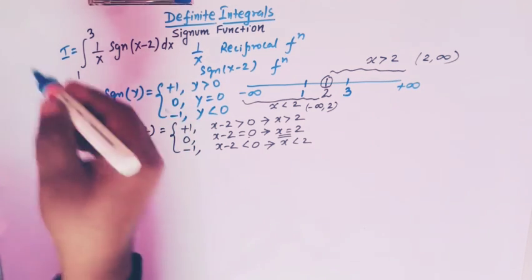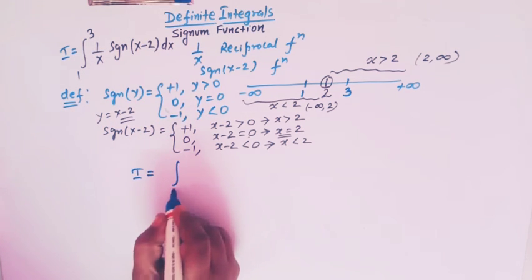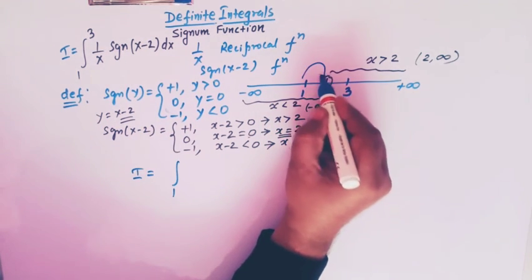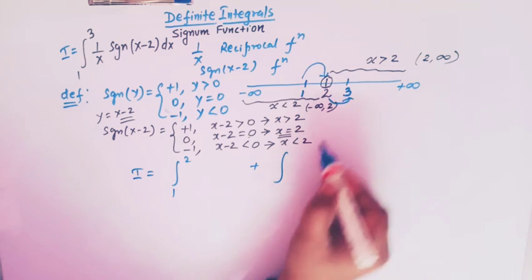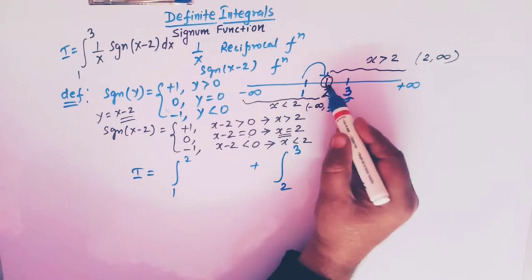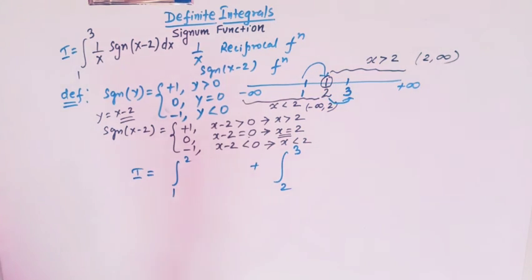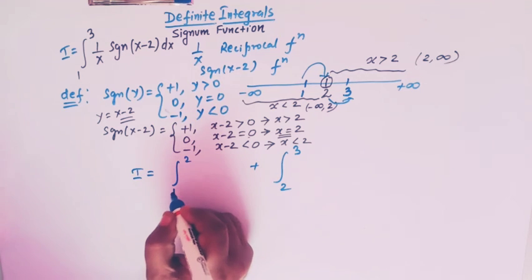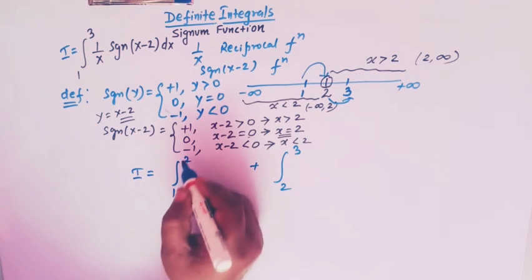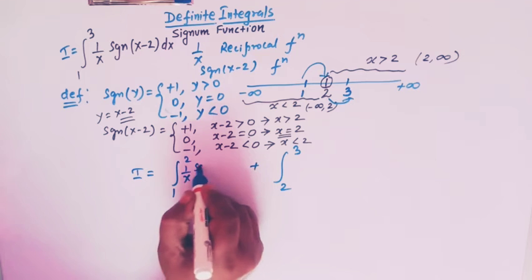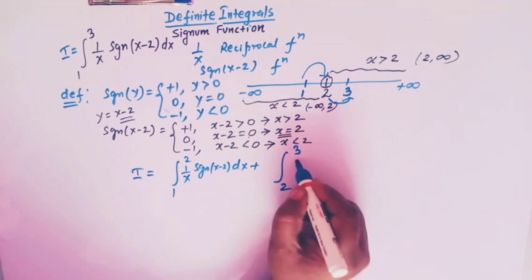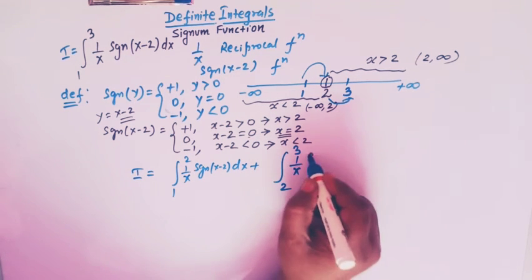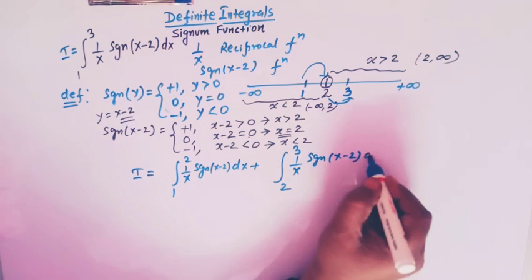Since the limits 1 and 3 straddle the break point x equals 2, we split the integral into the sum of two integrals: one from 1 to 2, and the other from 2 to 3. So the first integral is the integral from 1 to 2 of 1 over x times signum of x minus 2 dx, and the second is from 2 to 3 of the same integrand dx.